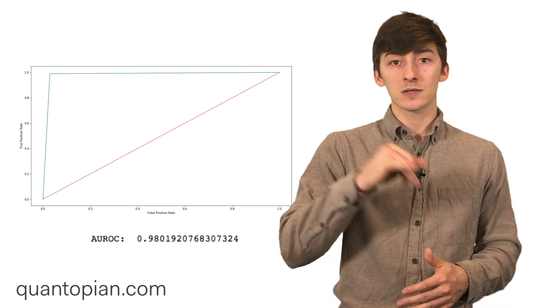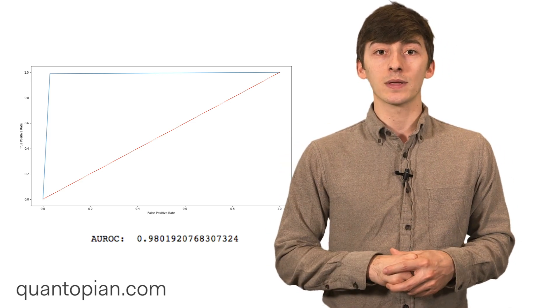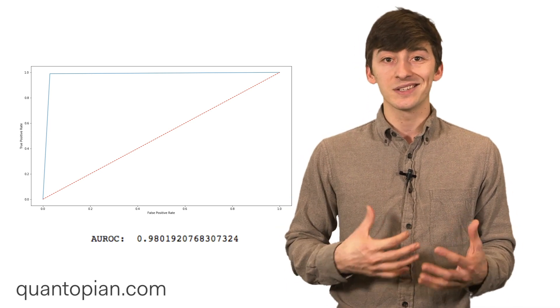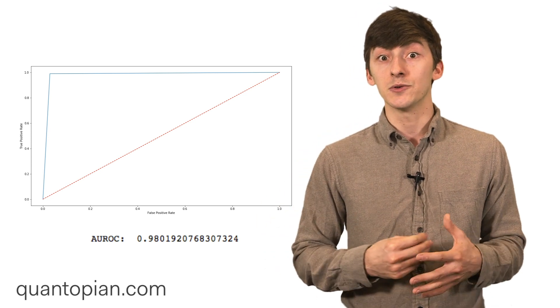You eventually end up getting this curve and you can take the area under it to determine how good your model is at differentiating things. Generally a value of around 0.8 for the area under that curve is a good benchmark.